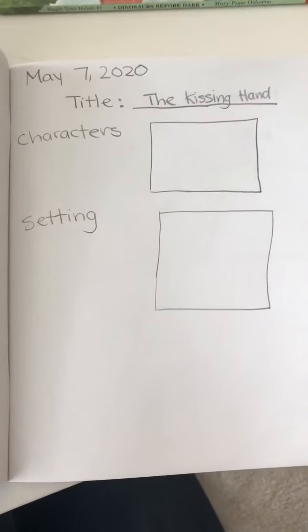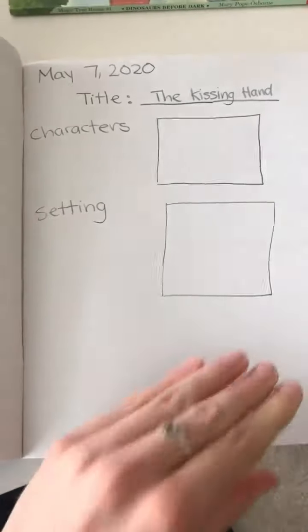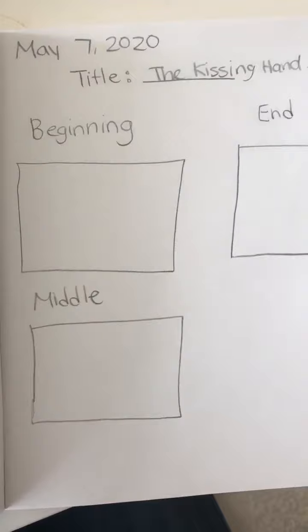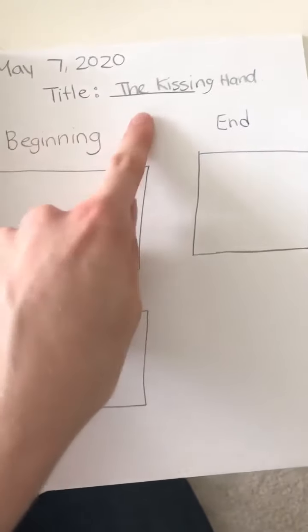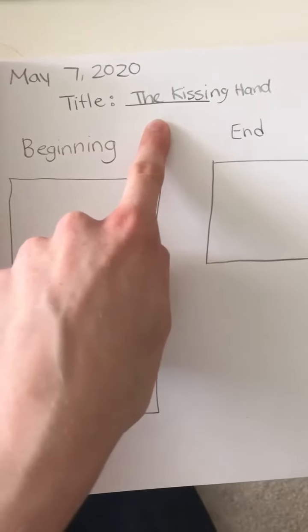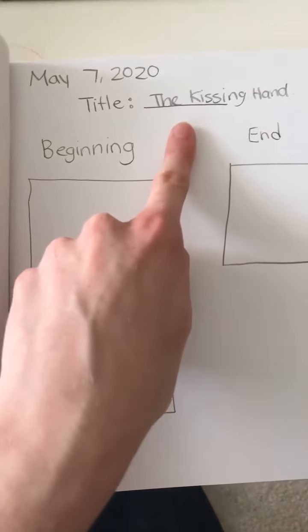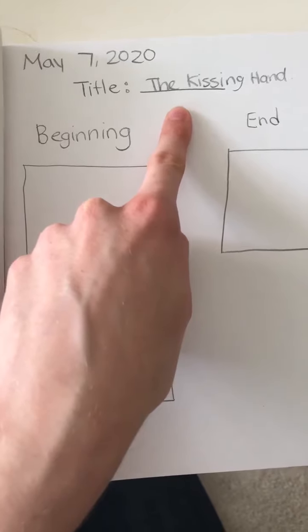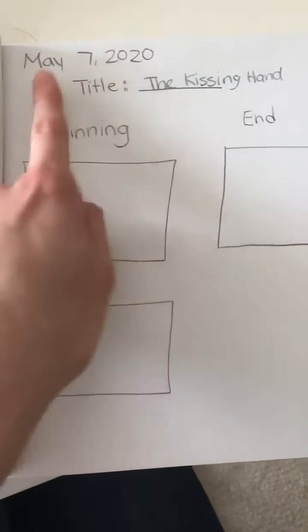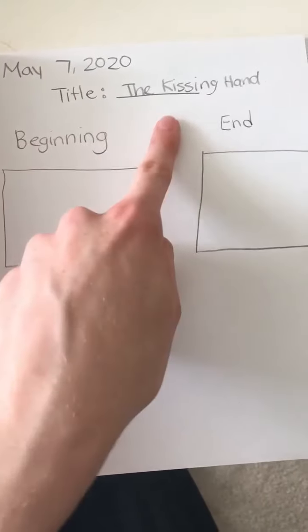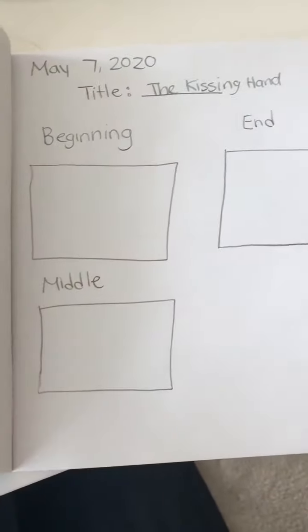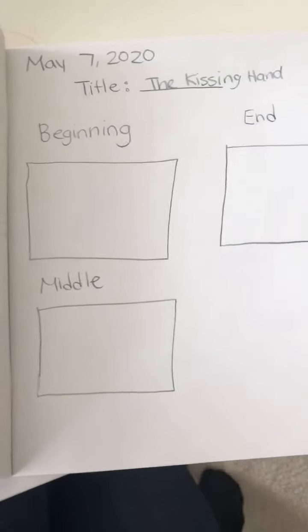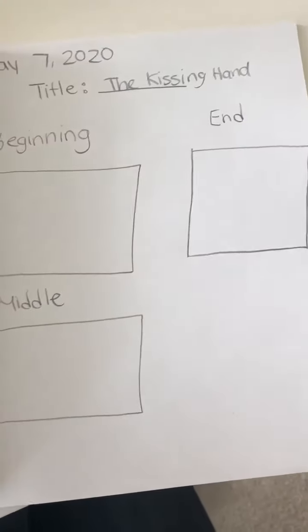I couldn't fit everything on one page, so I have another page as well. Same date at the top, same story title, because that's the book we're working on. I like to write the date and the title so I know when looking back that this is the same activity.